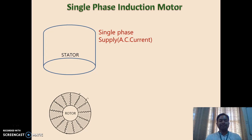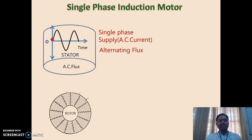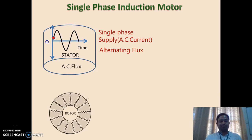When single phase supply — that is AC — is given, the single phase current will flow. This alternating current is changing with respect to time. So when single phase supply is given to the single phase winding of the induction motor, when current flows through the winding, flux will be set up. But that flux is alternating in nature, meaning it is changing its direction and magnitude with respect to time. So alternating flux has been set up in the stator.